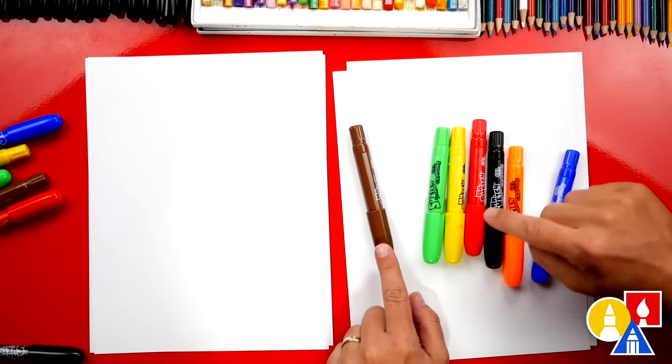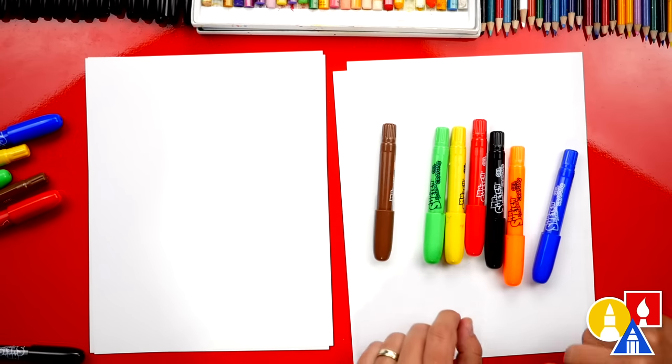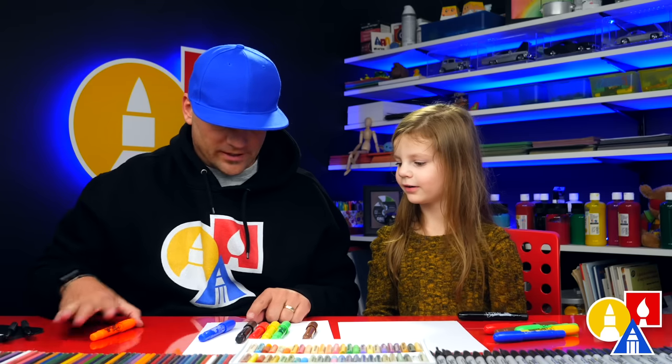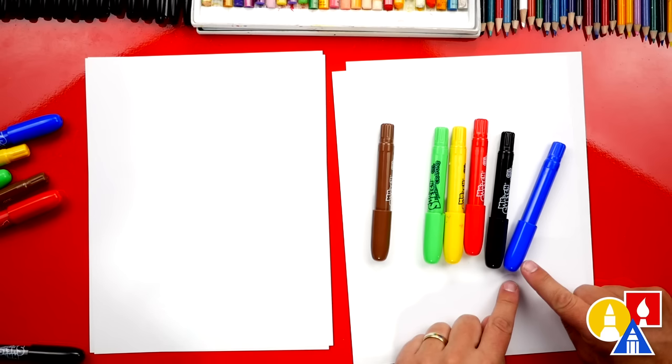What color is this? Brown. Brown. Green. Green. Yellow. Red. Black. Orange. Oh, and we don't really need orange. Yeah. And blue. Blue.